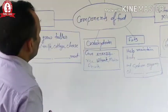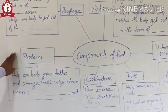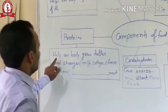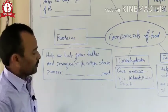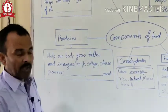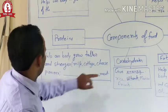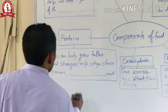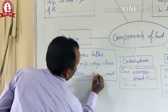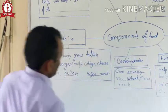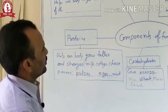After carbohydrate, the next important nutrient is protein. What is the function of protein? Protein helps our body grow taller and stronger. The food items that give us protein are milk, cottage cheese, paneer, pulses, eggs, meat, etc. These all are the examples of food that gives us protein.